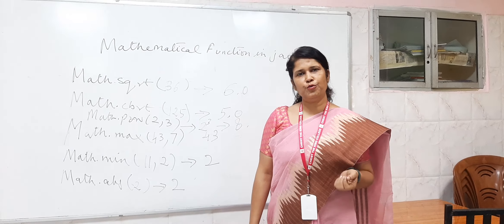So first one is Math.sqrt. This will return in double type. Suppose I am giving 36, so it will return 36 square root is 6. But the answer will come in double type.